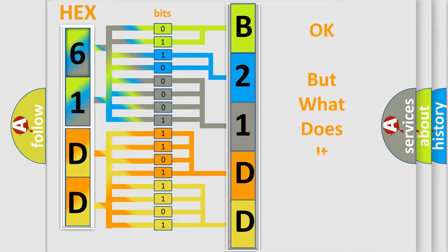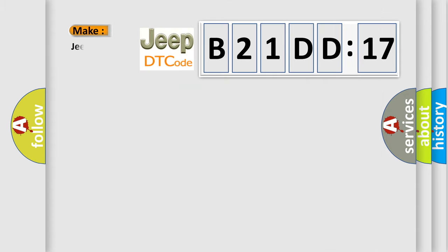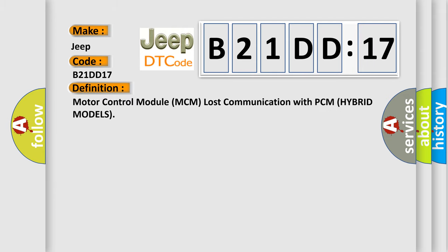We now know in what way the diagnostic tool translates the received information into a more comprehensible format. The number itself does not make sense to us if we cannot assign information about what it actually expresses. So, what does the diagnostic trouble code B21DD17 interpret specifically?